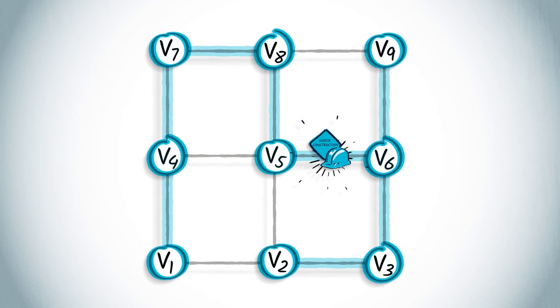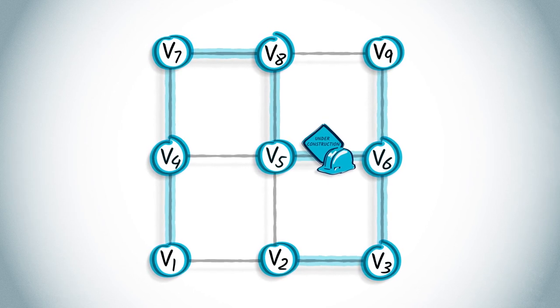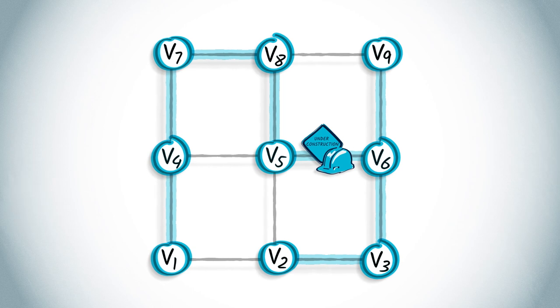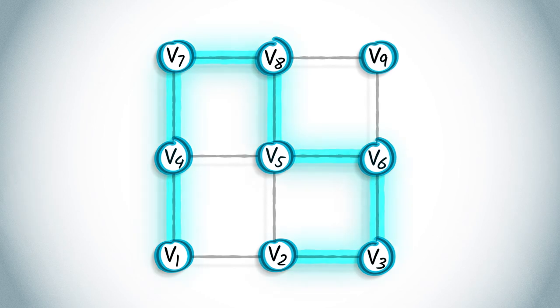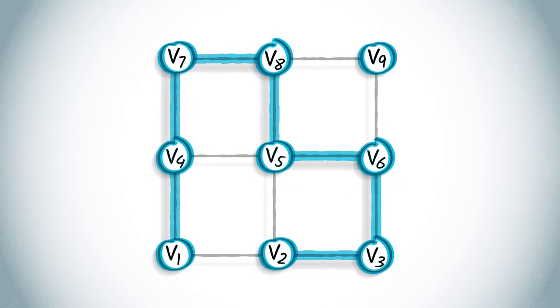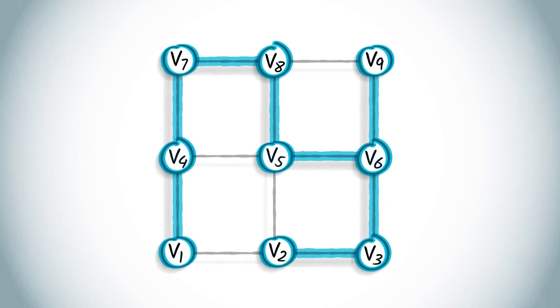However, it doesn't necessarily yield shorter paths between pairs of vertices in the graph. In this example, it takes seven hops to travel from V1 to V2, despite the fact that these could have been connected with just one hop.